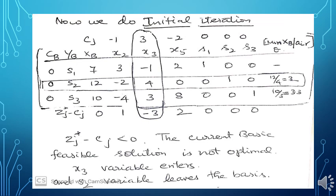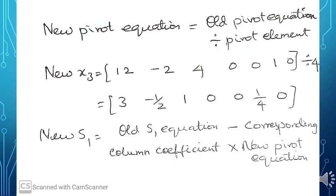S2 leaves and X3 enters the basis. The new pivot equation is the old pivot equation divided by the pivot element 4. So X3 = [12, -2, 4, 0, 0, 1, 0] ÷ 4 = [3, -1/2, 1, 0, 0, 1/4, 0]. With this new pivot equation, we will find the new S1, new S3, and new zj* - cj.